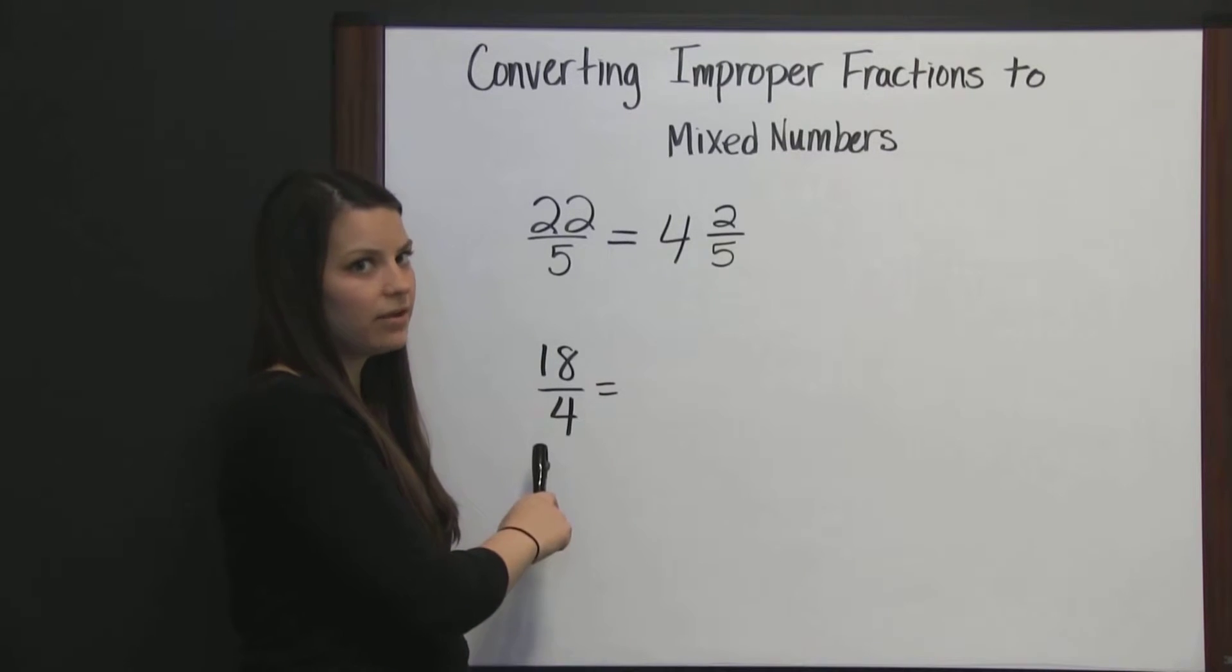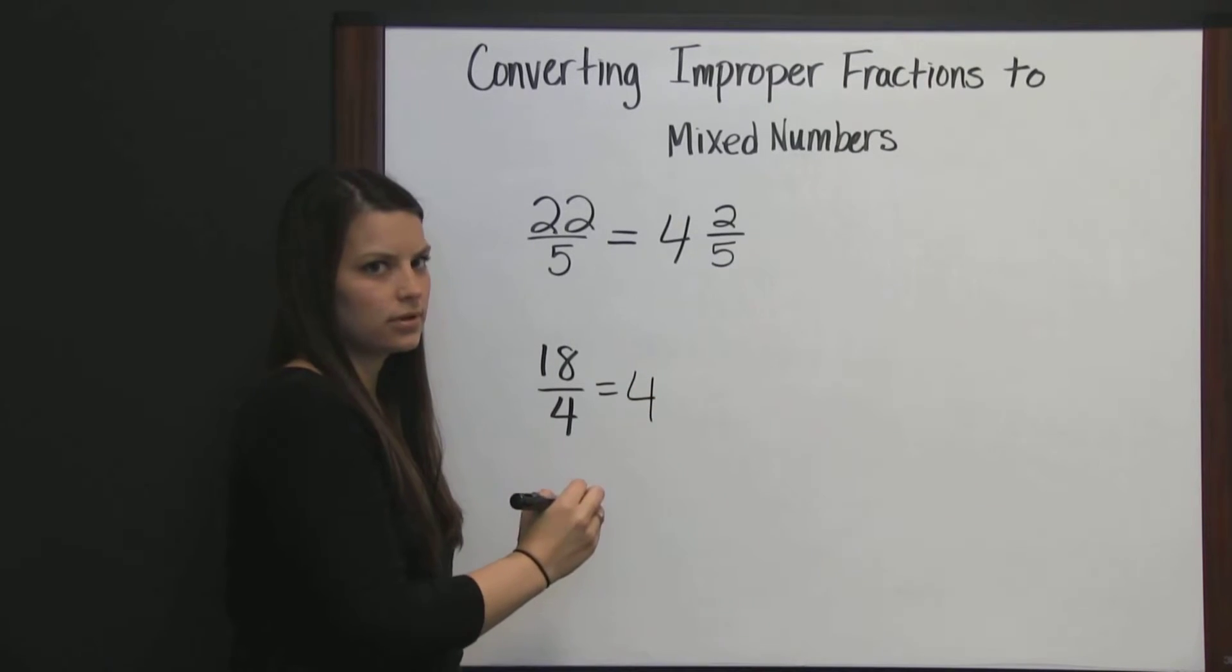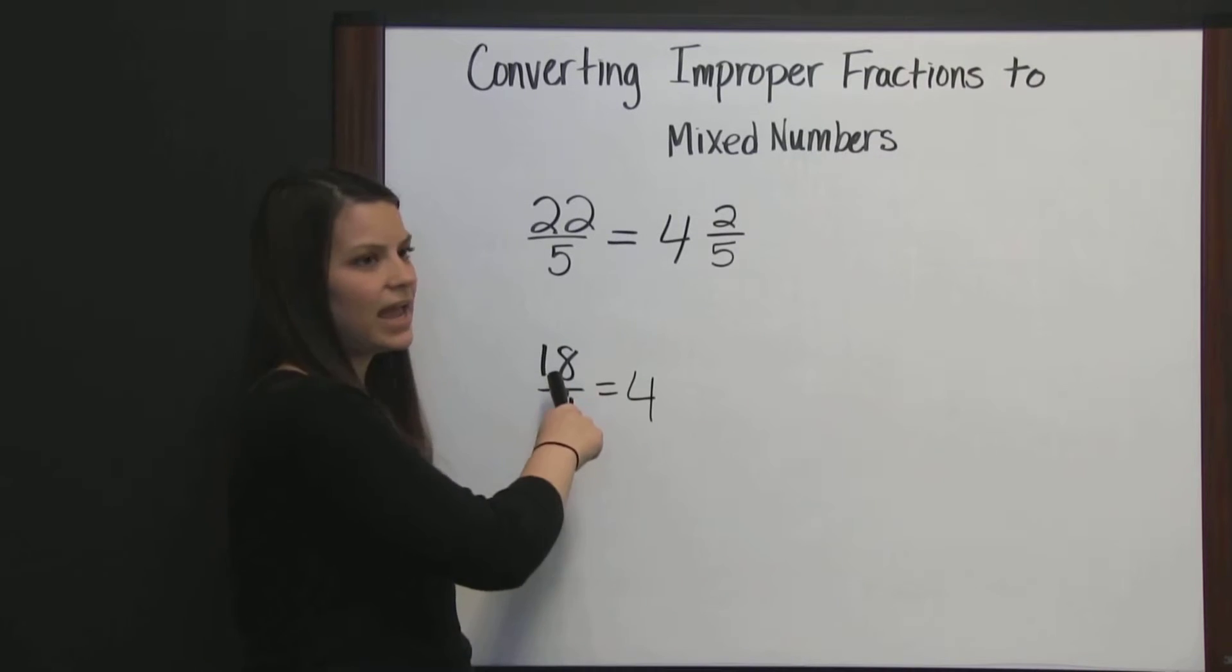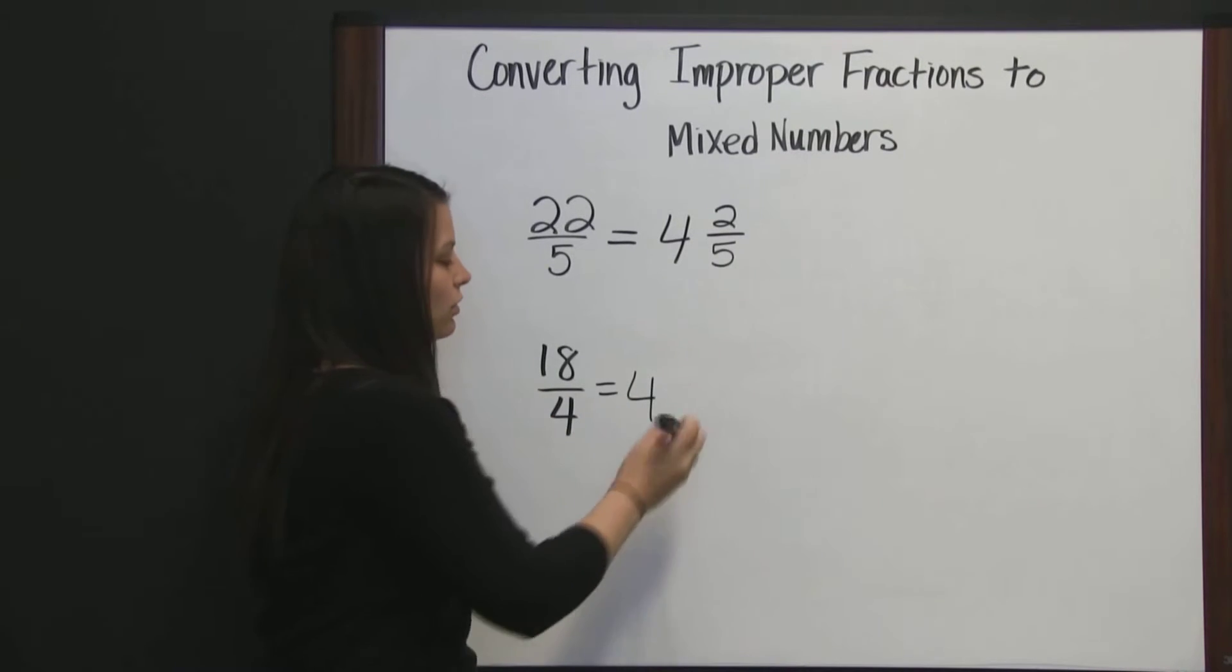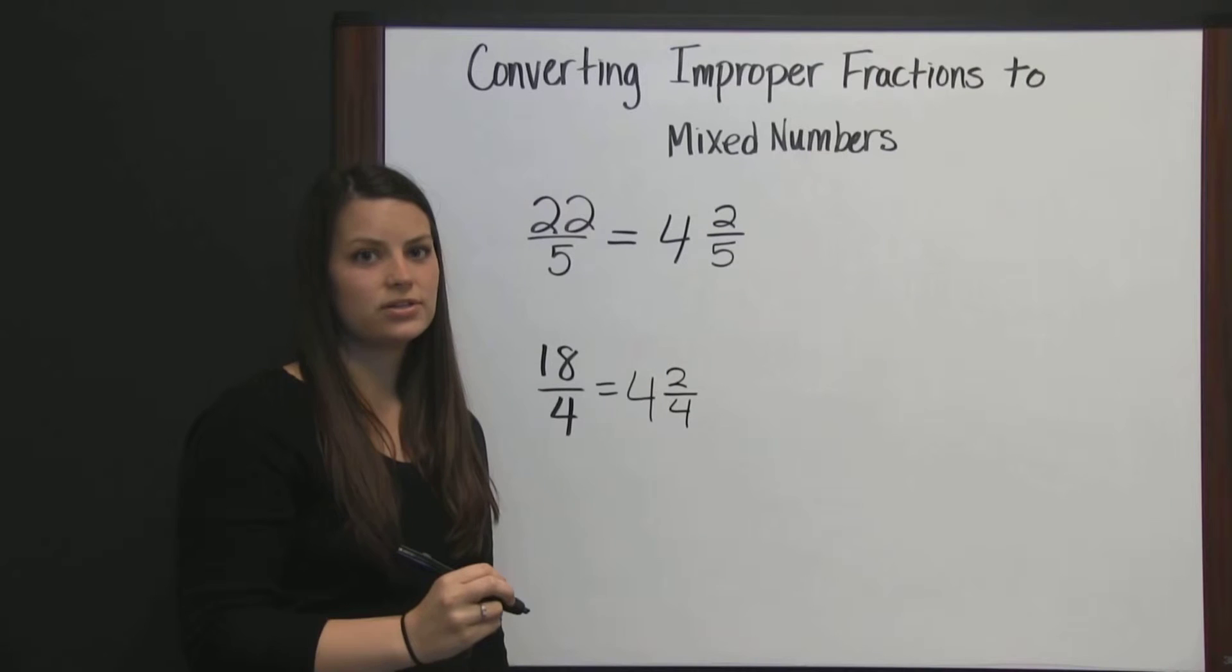Eighteen divided by four is four. Four times four is sixteen, so we have a remainder of two. Four goes into eighteen four times, with a remainder of two, out of four, since our denominator stays the same.